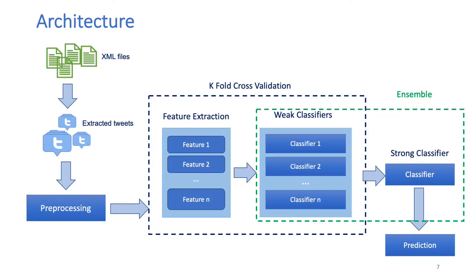The basic architecture of our model is to first extract tweets from the XML file and preprocess the content as per requirement, then extract features from the tweets which will be trained on weak classifiers using k-fold cross-validation to select the best classifier for each group of features. Then the output of each weak classifier will further be trained on a strong classifier to identify the fake news spreader. This is the overall architecture, and now we will look into each component in detail.